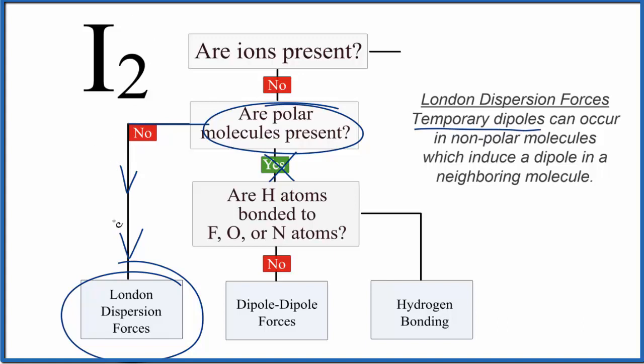Because the iodine atoms are large, as we go down group 17 the halogens, it'll have larger dispersion forces than something like fluorine or chlorine, just due to the size and how easy it is to polarize and induce those dipoles in those larger atoms.